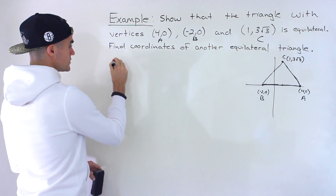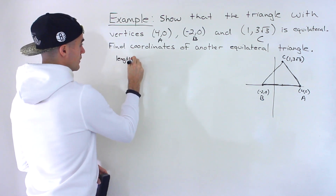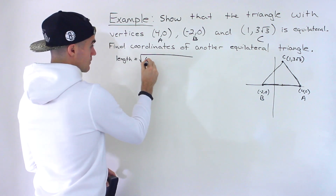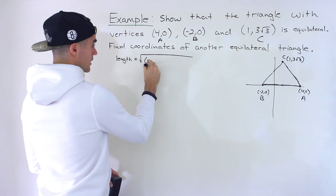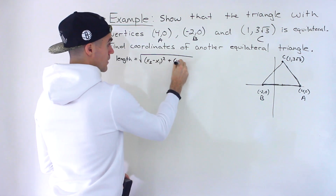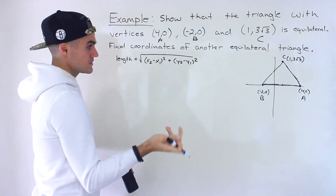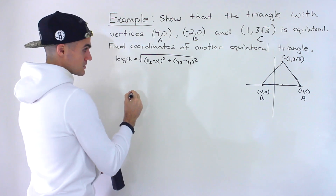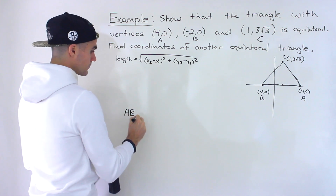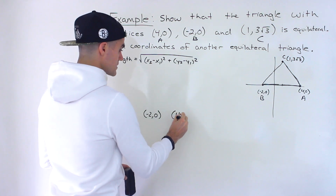So we've got to find the length of each side. The length formula, just in general, is the square root of (x₂ − x₁)² + (y₂ − y₁)², given two coordinates (x₁, y₁) and (x₂, y₂). So we just have to go through each of these sides. Let's start with side AB. We have points (−2, 0) and (4, 0).